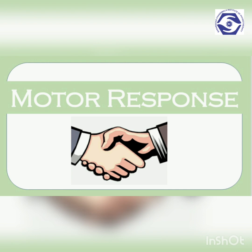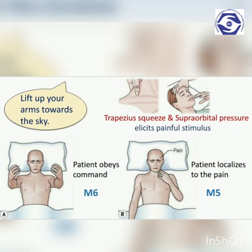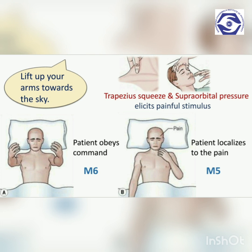The third component on the GCS is motor response. This reflects the function of the cerebral hemispheres, the diencephalon, the brain stem, and the corticospinal tracts. Only the best response from the arms is recorded, as leg responses to pain are less consistent and may be confused with a simple spinal reflex. If the patient has the ability to follow instructions and obeys simple commands such as 'lift up your arms' or 'put out your tongue,' the score is 6.